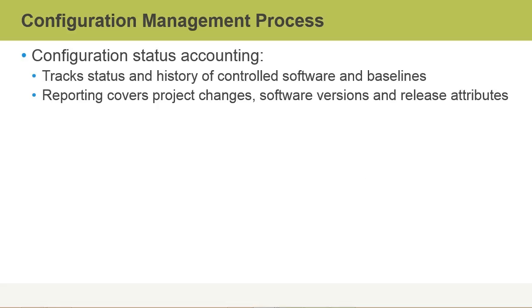The next phase is configuration status accounting. The accounting phase is responsible for tracking the status and the history of the controlled software and its baselines. The reporting element of this accounting phase covers any project changes, the software versions, and also any release attributes.